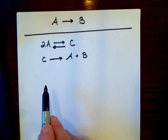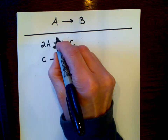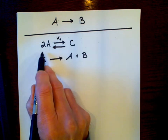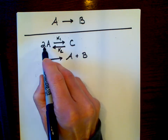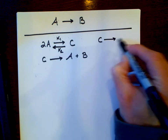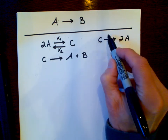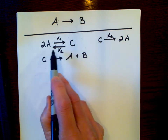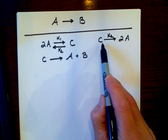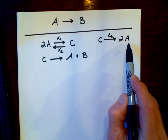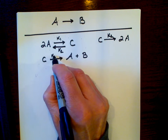The differential equations are going to be more difficult because we have three species and three steps. We name these steps: K1 for the forward direction of 2A going to C, K2 for the reverse direction of C going to 2A, and K3 for C going to A plus B. We can write these as three separate steps: 2A goes at rate K1 to C; C goes at rate K2 back to 2A; and C goes at rate K3 to A plus B.